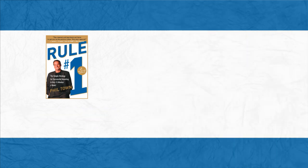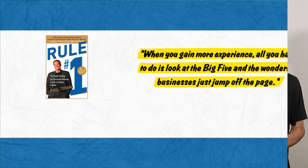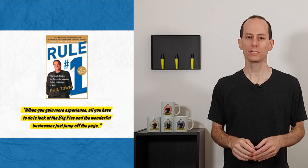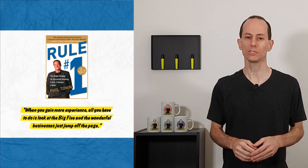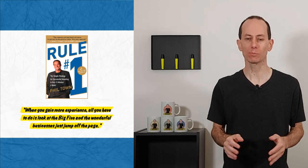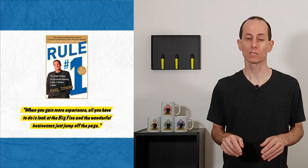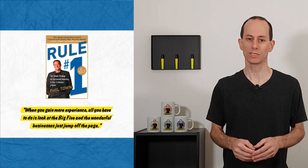The second highlight is from page 83. When you gain more experience, all you have to do is look at the big five, and the wonderful businesses just jump off the page. The big five Phil mentions here are the big four mentioned in Invested. There are actually six big numbers, and both books cover all six. But let's look at the highlight. I spoke about another highlight in the Invested video, which is similar to this one. Clearly, these highlights resonate with me.